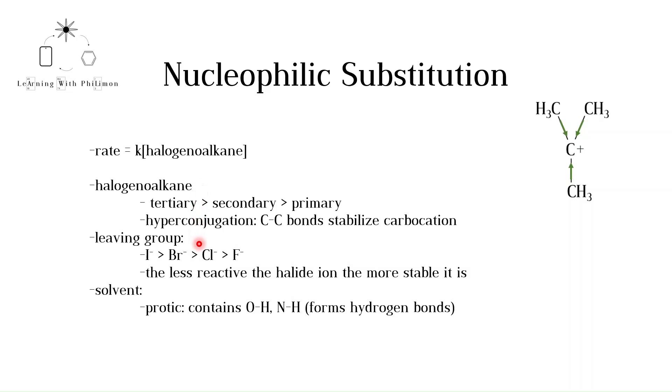The leaving group also affects the rate of the reaction, as discussed in the previous video. Iodide ions are less reactive and thus more stable leaving groups. Finally, the solvent in which the reaction is conducted affects the rate.